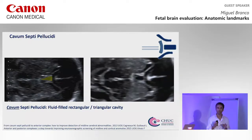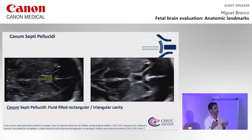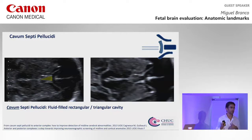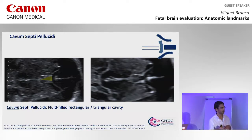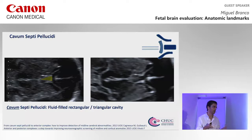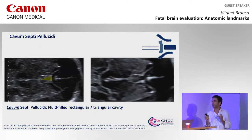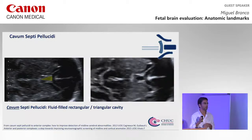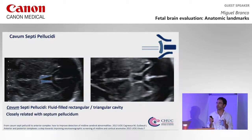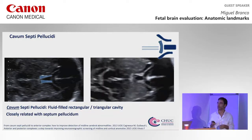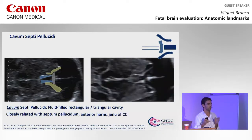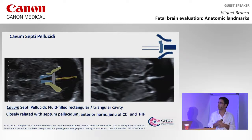The cavum septum pellucidum is a fluid-filled cavity. We really don't know the origin of this fluid because it's not connected with the ventricular system nor with the subarachnoid system. It's rectangular or triangular — one out of four will be triangular. It's closely related with the leaflets of the septum, with the anterior horns of lateral ventricles, with the corpus callosum, the genu, the knee, and also with the interhemispheric fissure.